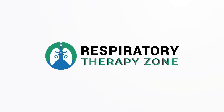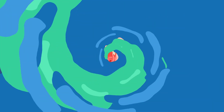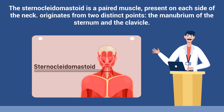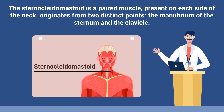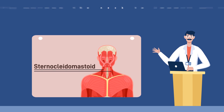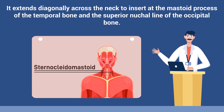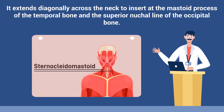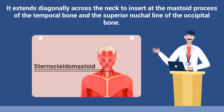The sternocleidomastoid is a paired muscle present on each side of the neck. It originates from two distinct points: the manubrium of the sternum and the clavicle. It extends diagonally across the neck to insert at the mastoid process of the temporal bone and the superior nuchal line of the occipital bone.